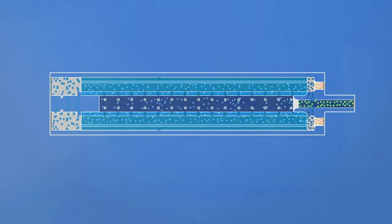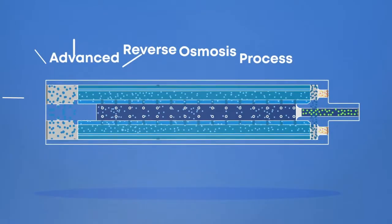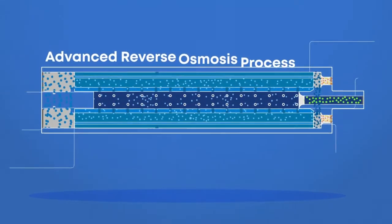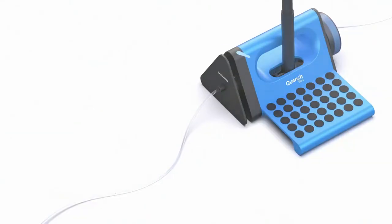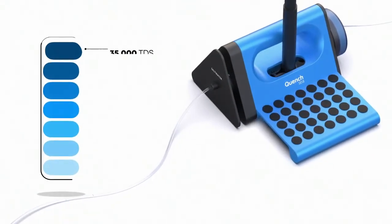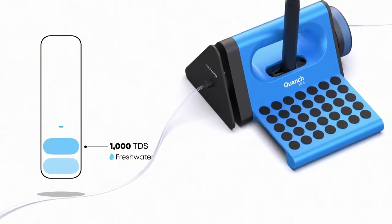Using an advanced reverse osmosis process, water molecules are forced through semi-permeable membranes to filter out impurities, salts and all contaminants, leaving only pure, safe drinking water that is guaranteed to be below 1,000 TDS.